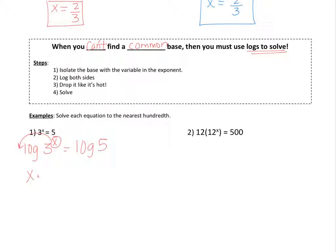So x times log of three equals log of five. And again, to get x by itself, we'll just divide by log three. Pause the video again. Put this into the calculator. See what you get. Again, make sure you're putting the top in parentheses and the bottom in parentheses.